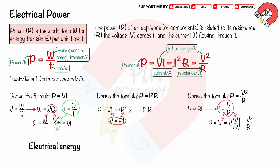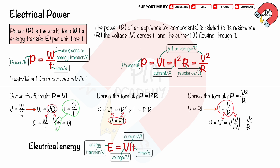Electrical energy: we can write the formula as E equals VIT. We can derive this equation as follows. From the equation P equals energy transferred E over T, and rearranging as E equals PT. Substituting P equals VI into this equation, we get E equals VIT.